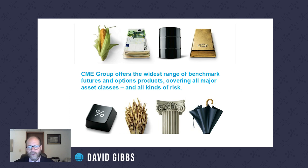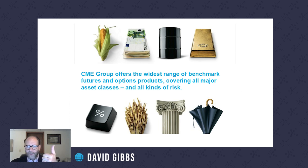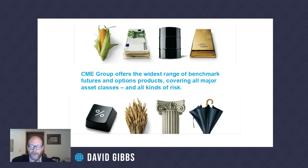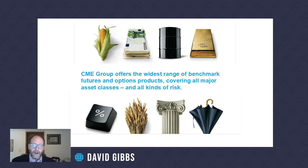CME Group was formed in 2007 with the combination of the Chicago Board of Trade and the Chicago Mercantile Exchange. They subsequently purchased the New York Mercantile Exchange, which had previously acquired the COMEX exchange — giving us four legacy exchanges under one clearing facility. Through those mergers and product development since then, we now have six asset classes: agriculture, foreign exchange, industrial commodities, metals, interest rates, and equity index products, plus specialized products like cryptocurrency futures, real estate futures, and weather futures.